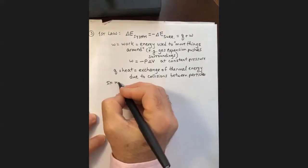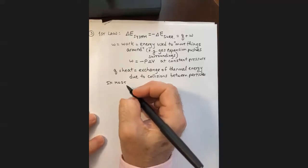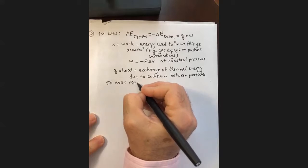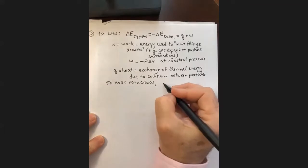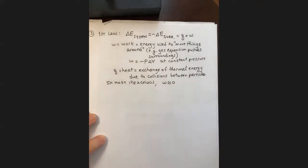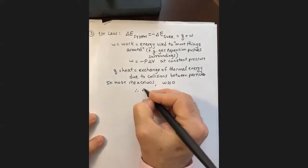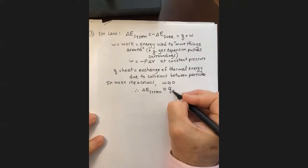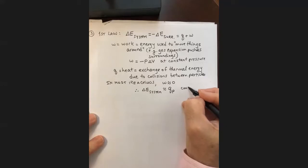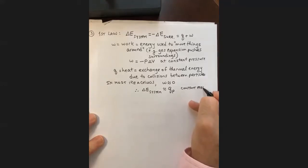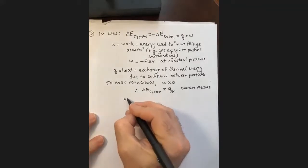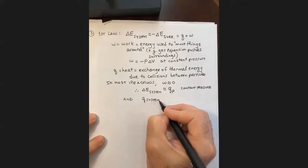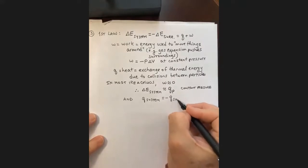Because most chemical reactions we study do not produce noticeable expansions of gas, in most reactions we're going to say that the work performed is nearly zero — the reaction does not cause significant movement of the surroundings. Therefore, typically, the energy change of the system is going to be essentially just heat at constant pressure. And therefore Q of the system is going to equal minus Q of the surroundings.